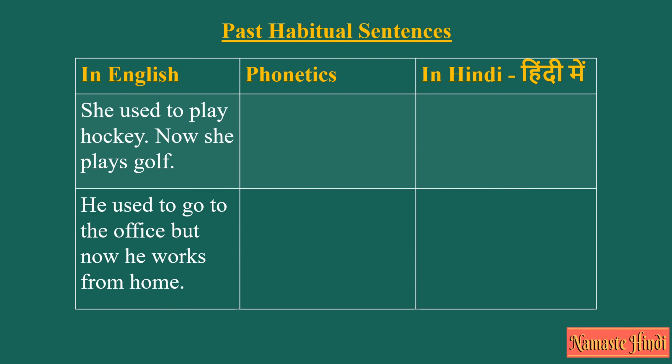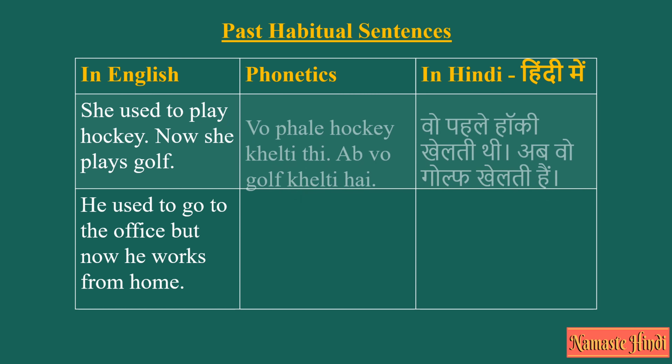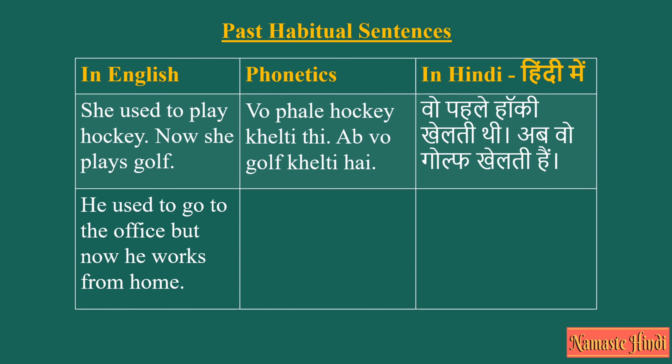Let's look at some more sentences. She used to play hockey, now she plays golf — Wo pehle hockey kheelti thi. Ab wo golf kheelti hai.